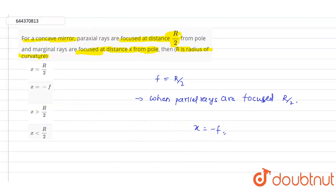So out of these four options, if you see option B, x equals minus f, option B is the correct answer for this question.